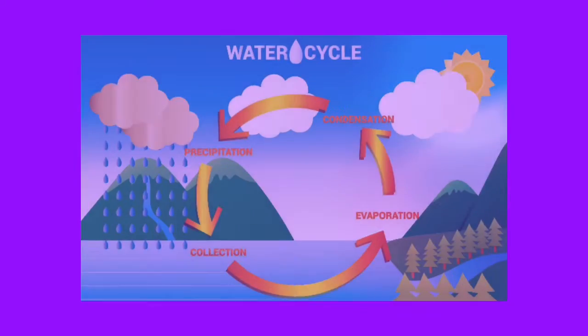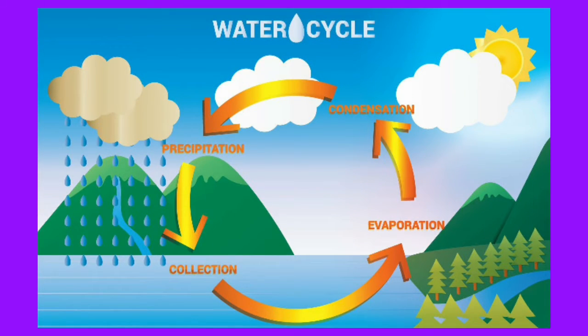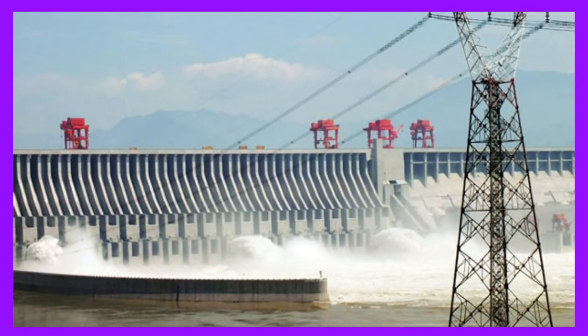Let us take a water cycle example. The heat of the Sun falls on the sea water and it evaporates, making clouds. Due to these clouds, rain starts and falls on the earth and into rivers. The water flows from the rivers into a reservoir dam, and at a specific height the water gains potential energy.